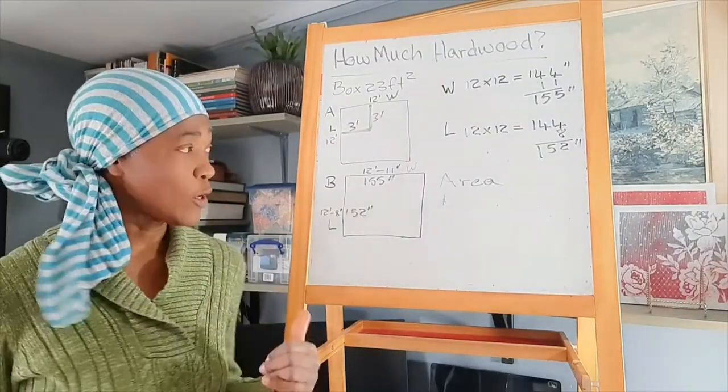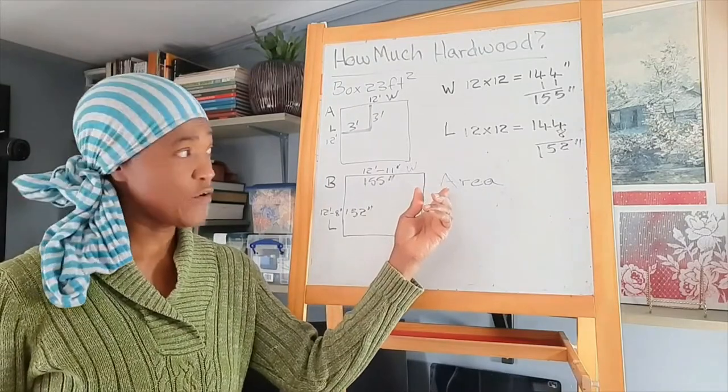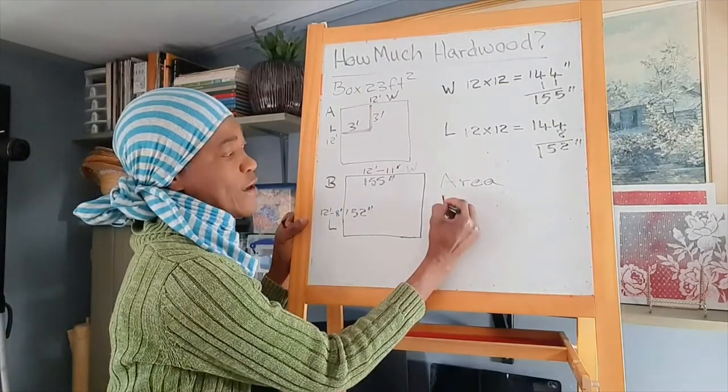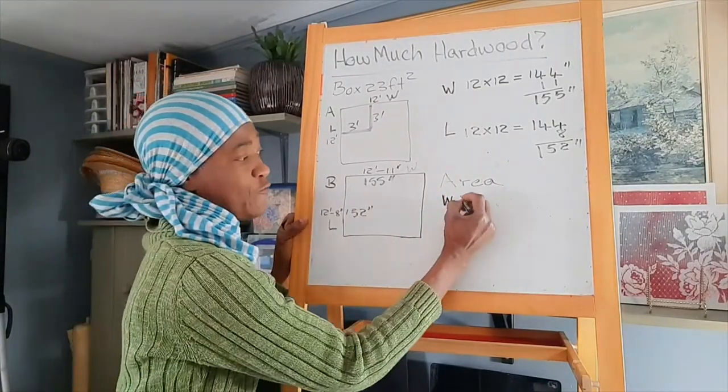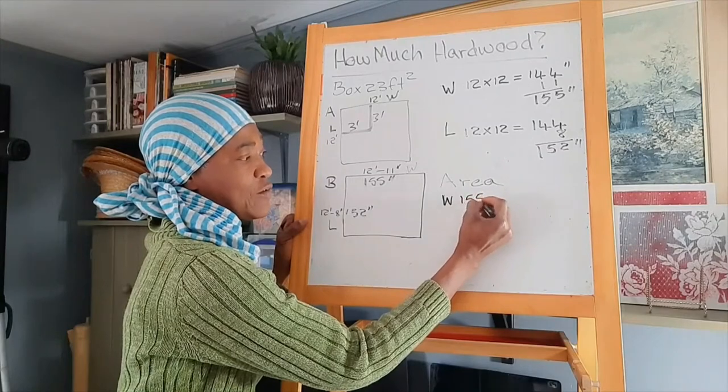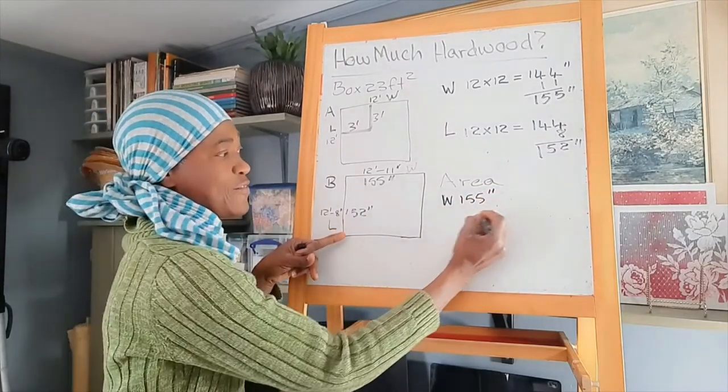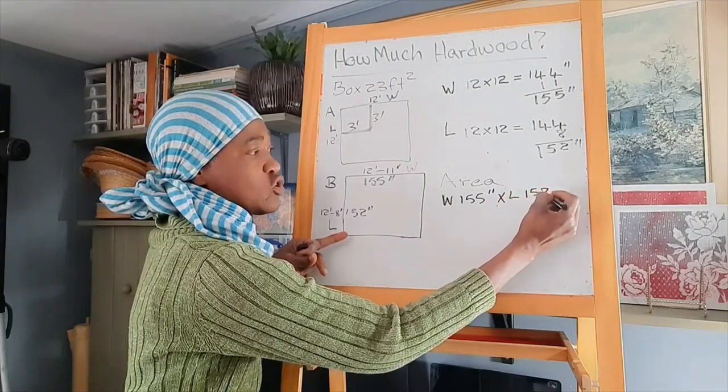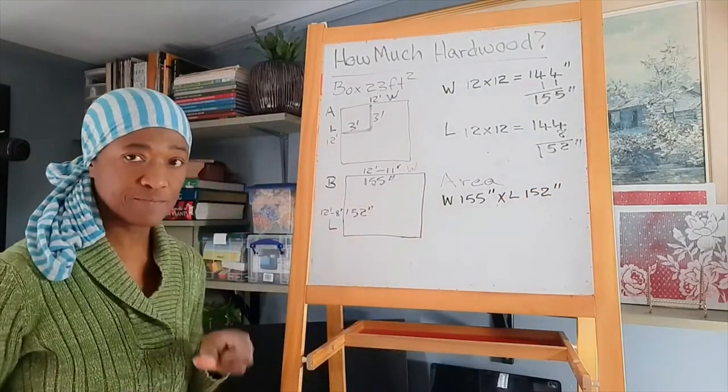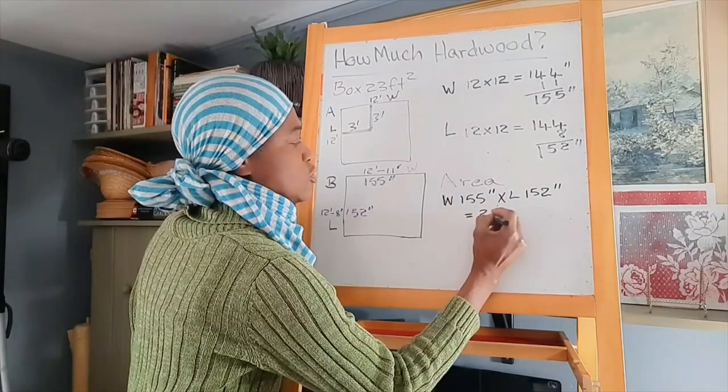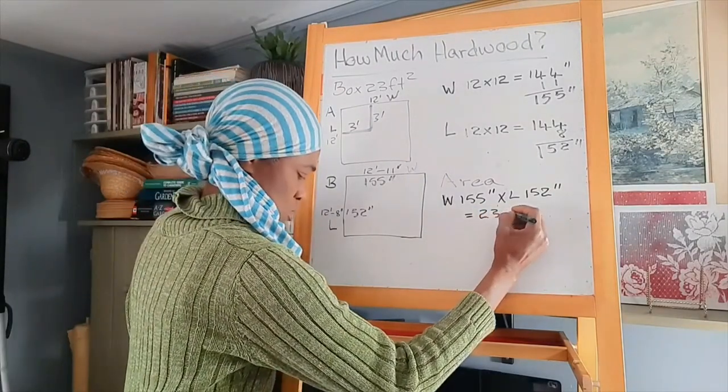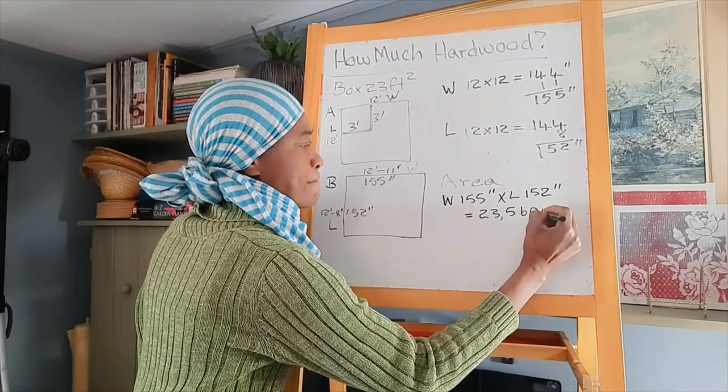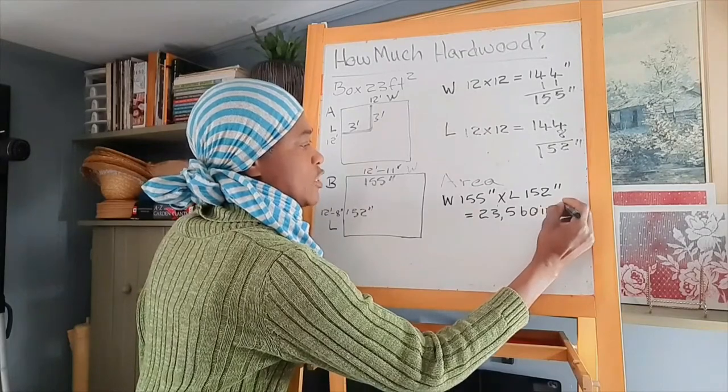So that's 152 inches. Therefore, in order to find the area of the room, we will have to multiply the width, which is 155 inches by the length, which is 152 inches. So that equals 23,560 inches squared.